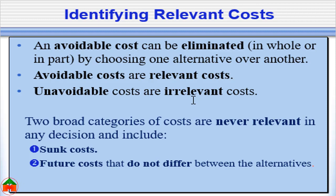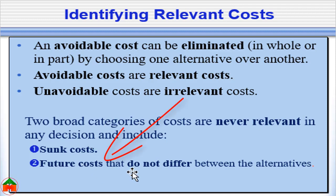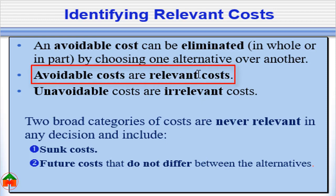For example, sunk costs — costs that occurred in the past — and future costs that are unavoidable are both types of unavoidable or irrelevant costs. These two types of costs will not be considered in differential analysis. In differential analysis, we only consider the relevant or avoidable cost.